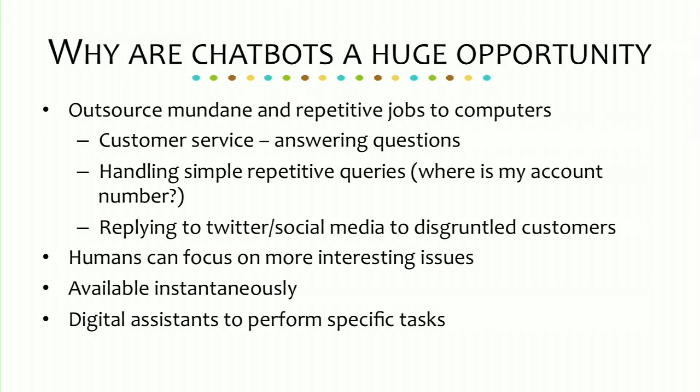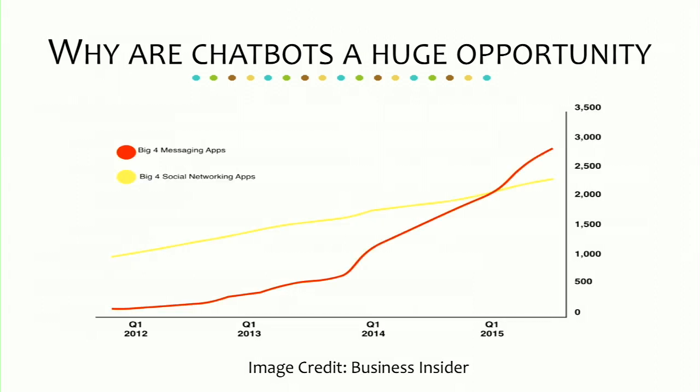Digital assistants are available instantaneously with no downtime, except when your server crashes, and they perform specific tasks. For example, a digital assistant for FAQs only helps with FAQs — if you ask it 'How do I save my marriage?' it won't do a good job at that. Another reason chatbots are a huge opportunity: a recent study from Business Insider shows people like communicating one-on-one, with messaging apps significantly outpacing social networking apps in usage.